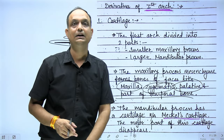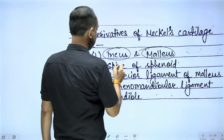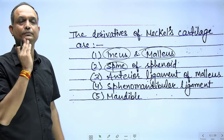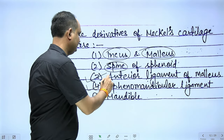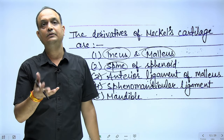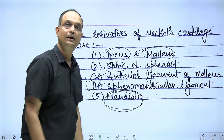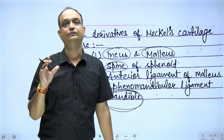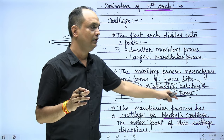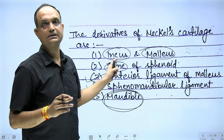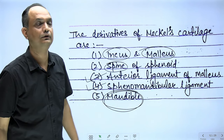Meckel's cartilage gives rise to the two ear ossicles (malleus and incus), the spine of the sphenoid, and its perichondrium forms two ligaments: the anterior ligament of the malleus and the sphenomandibular ligament. Mesodermal condensation around Meckel's cartilage forms the mandible. Bones of the first arch: maxilla, palatine, part of temporal bone, zygomatic, malleus, incus, spine of sphenoid, and mandible.